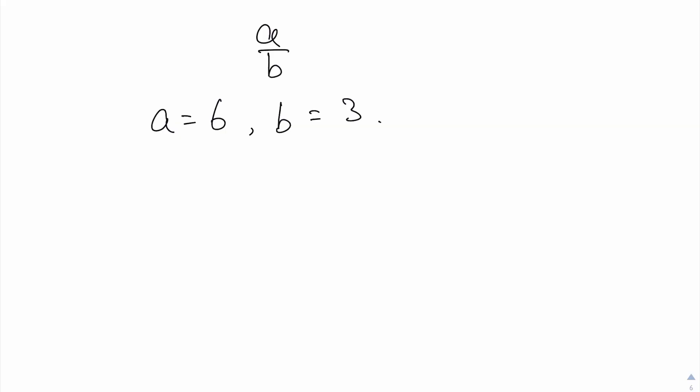Hi everyone. In this video I'm going to explain the last part of finding the upper bound and lower bound of two unknowns. So if you are given a fraction a over b, with a equal to 6 and b equal to 3, to get the upper bound and lower bound of a over b, you will have to get the upper and lower bounds of a and b.